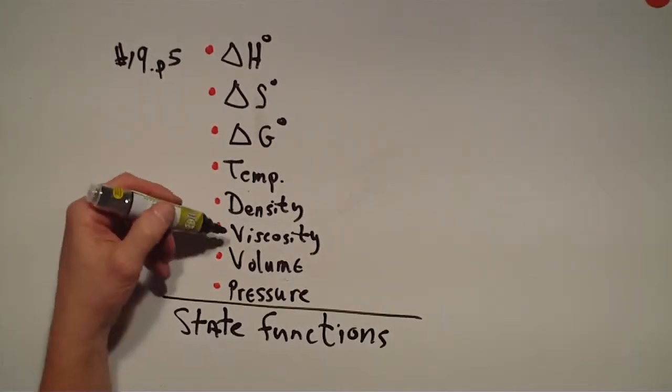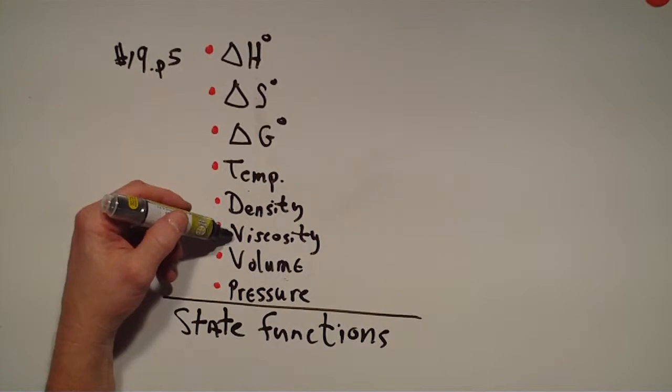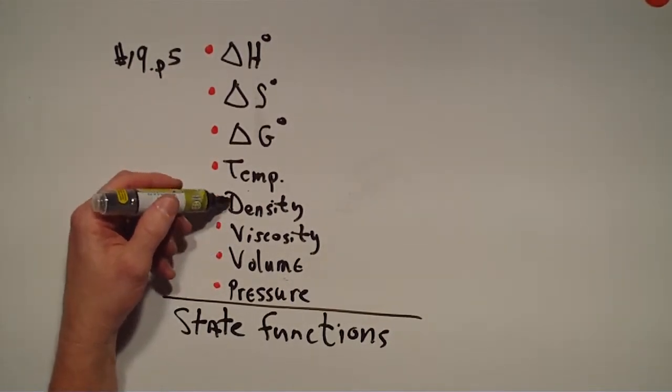If you heat up something, it changes the viscosity. As you know, for example, honey, if you get it hotter, it becomes less viscous. The density of things changes also with temperature.